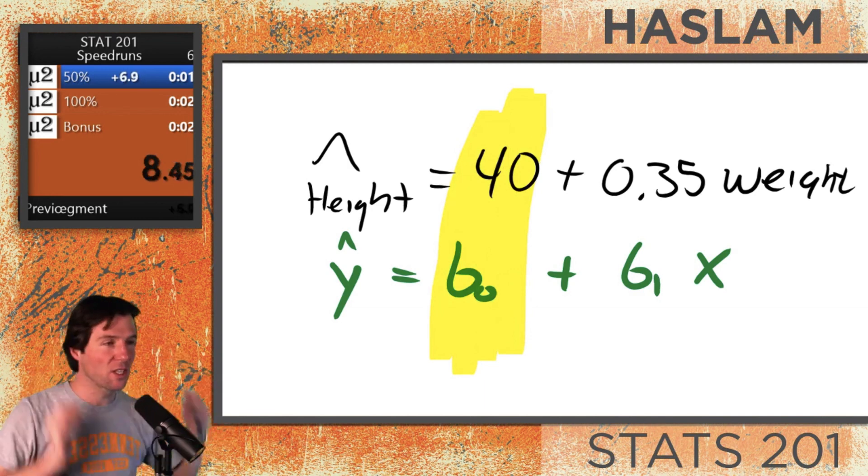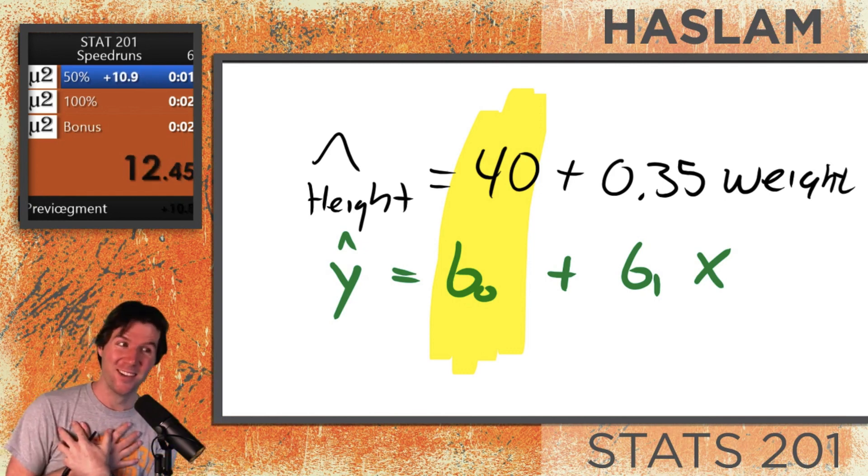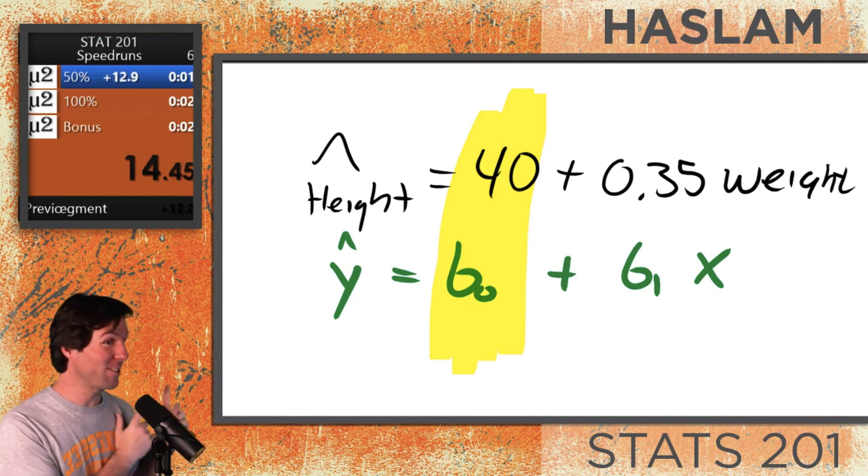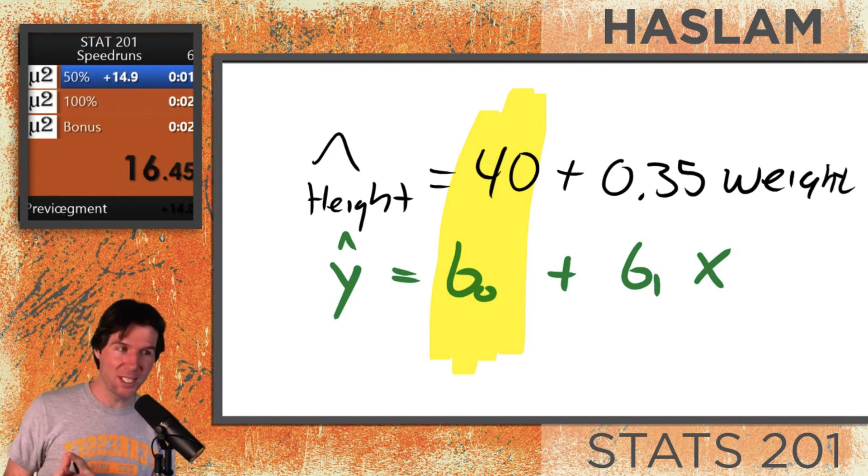On the test, if there's a question like interpret the intercept, do not say—I see it all the time—the intercept is 40. Yes, that is true, but that is not an interpretation of the intercept.